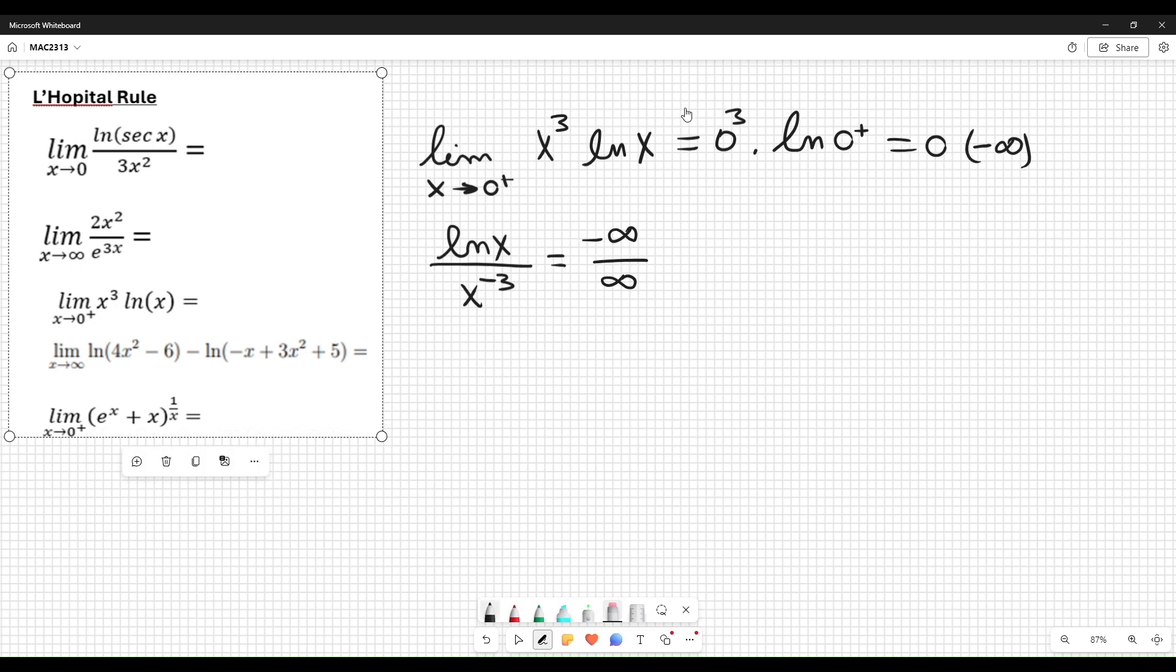Ready to apply L'Hôpital rule now. Derivative of logarithm is 1 over x. Derivative of x to the minus 3 is minus 3x to the minus 4. So the algebra here is 1 over x times minus 3 x to the 4 positive.